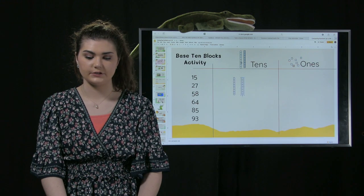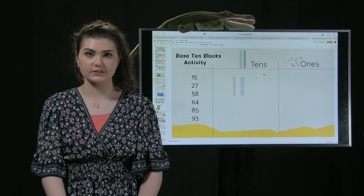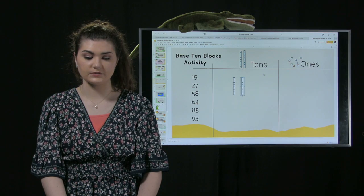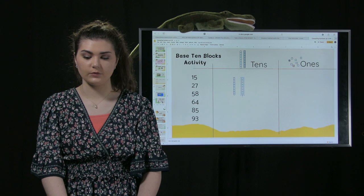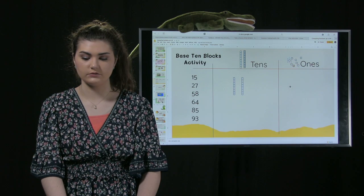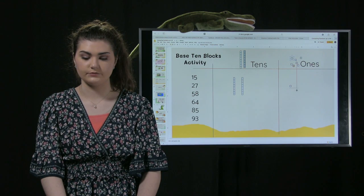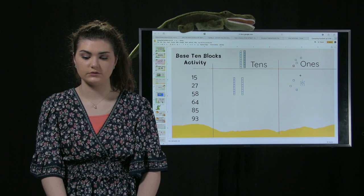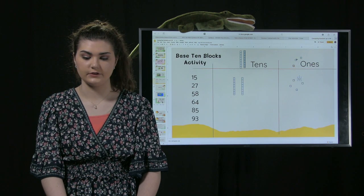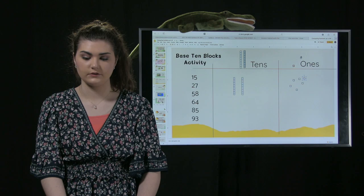Then we're going to look at the right side, which is the ones place. As you can see here, there are seven in the ones place. We're going to count one, two, three, four, five, six, seven.